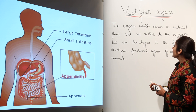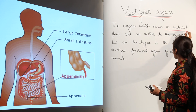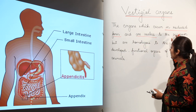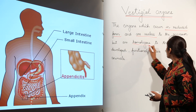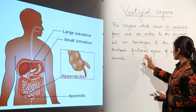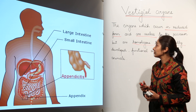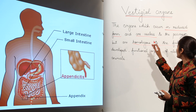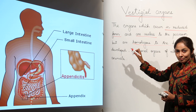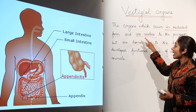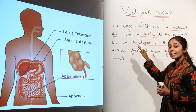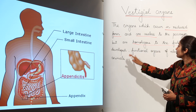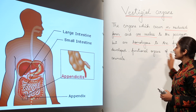Vestigial organs are those organs which occur in reduced form and are useless to the possessor, but are homologous to the fully developed functional organs of related animals. They were useful in our ancestors but are no longer functional.